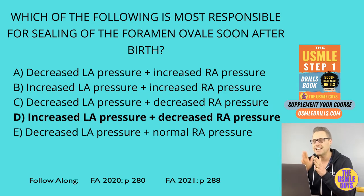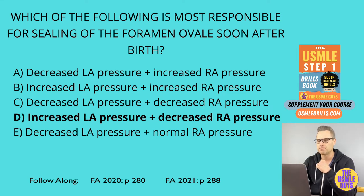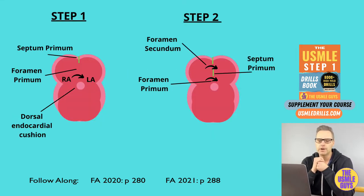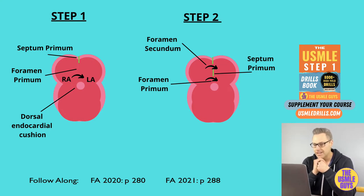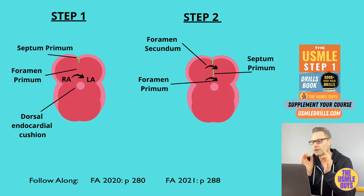Now let's take a look at the next couple slides in your book. I want to walk you through a quick review of the steps that take a developing heart from wide open to the fully formed atrial septum. In step one, the septum primum grows towards the endocardial cushions, leading to a narrowing of the foramen primum. In step two, the foramen secundum forms in the septum primum, while we see the regression of the foramen primum.